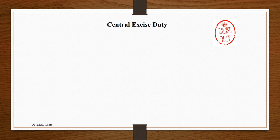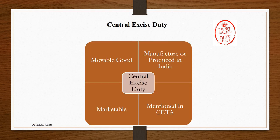The first tax we are going to study in detail is central excise duty tax. As the name suggests, it was collected by the central government before the introduction of GST. Central excise duty tax is levied on goods which were movable, marketable, and most importantly, manufactured or produced in India. The fourth feature is that all such goods should be mentioned in CETA — the Central Excise Tariff Act.